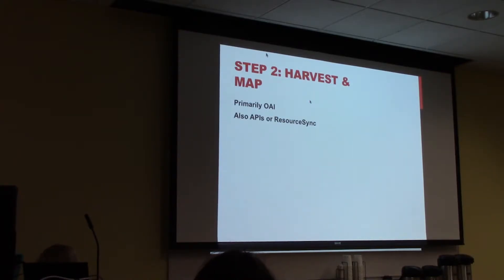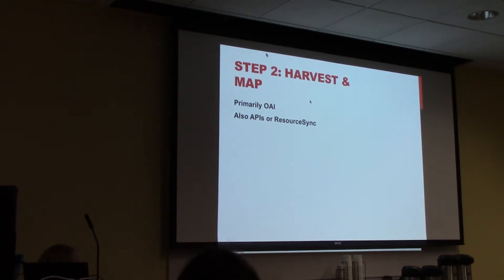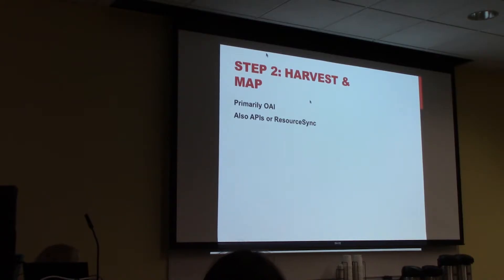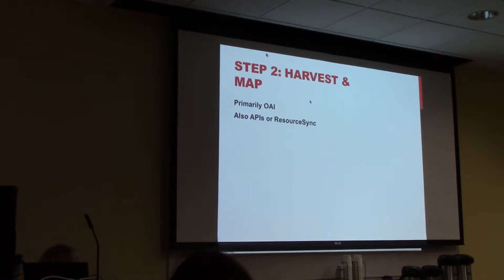Once we have all that mapping ready to go, that's when we actually start the harvest process — the first time we do a full-scale harvest of your records. Usually it's an OAI harvest, but we can work with you if you're interested in setting up some other kind of API. We have a number of different processes we've used and can give you recommendations on what's worked and what hasn't. After we harvest and run the mapping, all of that happens on our end and we'll iterate through it and get back to you once we've got mapped records that look pretty good.